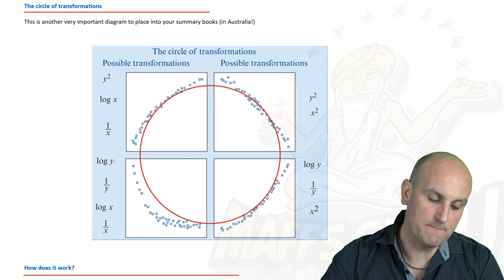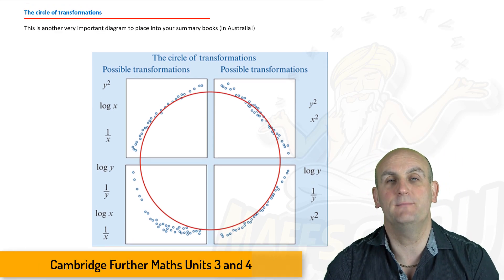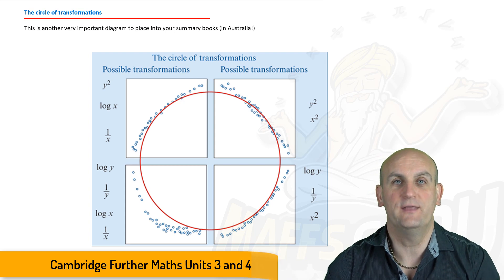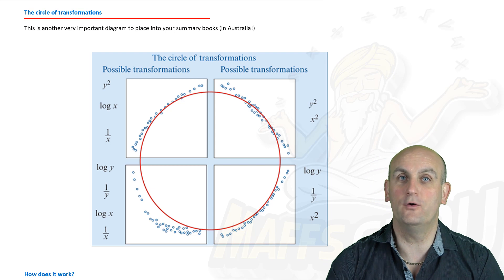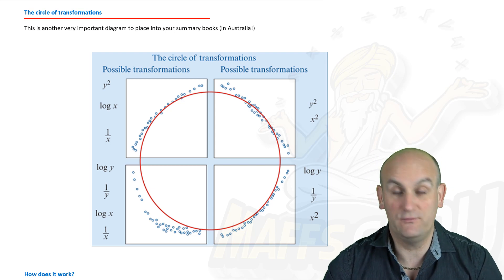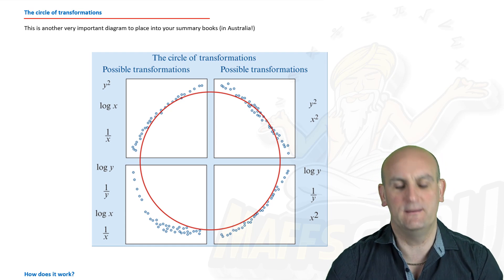Now this beautiful table here or this diagram here has been extracted from the Cambridge Further Maths Unit 3 and 4 textbook and thank you very much to Cambridge for allowing me to use sections of your book for my videos. Greatly appreciated and if you aren't using the Cambridge books you really should because they are quite phenomenal and no I'm not being sponsored by Cambridge.